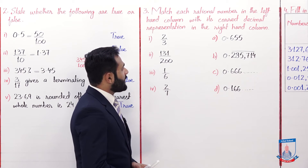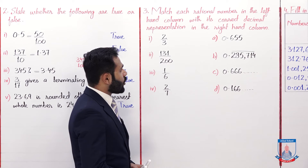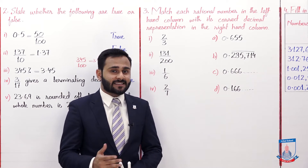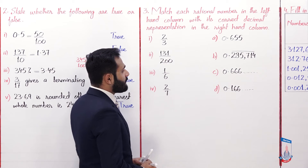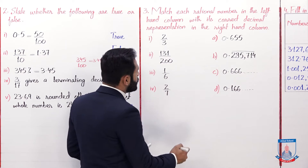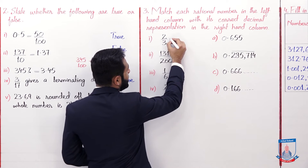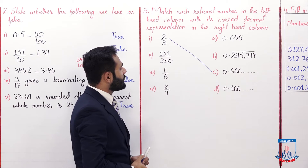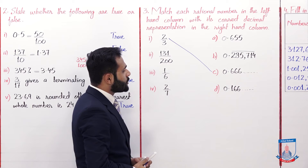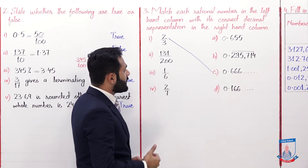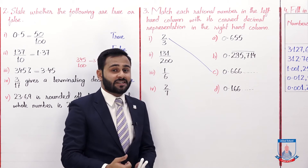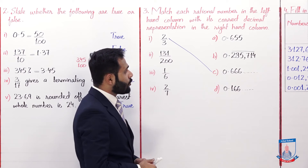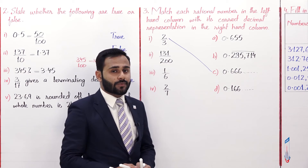The first is 2/3. Solving 2/3 gives 0.666666... and so on. That is equivalent to option C. Now the second: 131/200. Solving 131 divided by 200 gives 0.655. Match the second with option A.